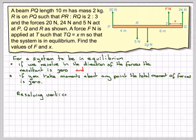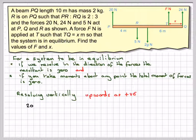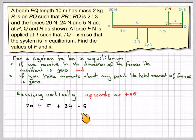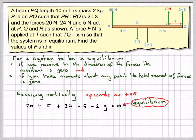Resolving vertically upwards being positive, we're going to have 20 plus F which we've got to find plus 24. It's going to be equal to downwards minus 5 minus 2G, has to be equal to 0 for equilibrium.